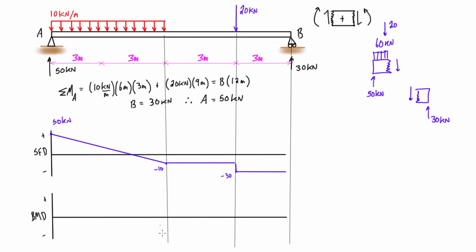For the bending moment diagram: where we have areas of the shear force diagram on the positive side of the axis, that area equals the positive change in magnitude of the bending moment diagram. Where areas fall on the negative side, they push the bending moment diagram toward the negative axis — all working left to right. This means we need to figure out where the shear force crosses zero.